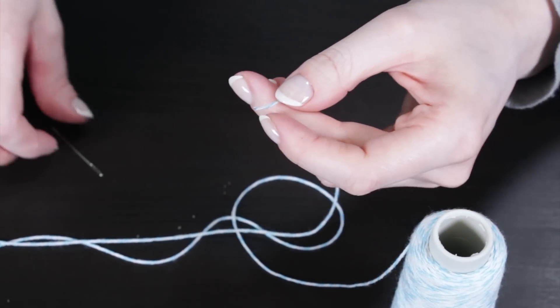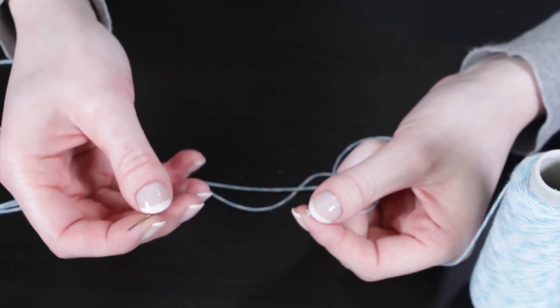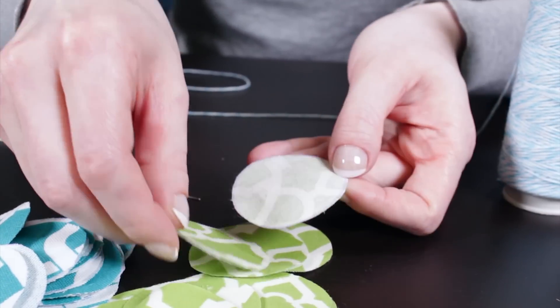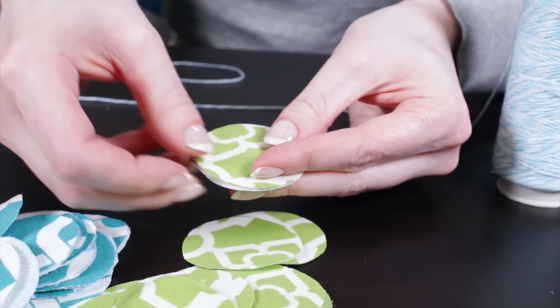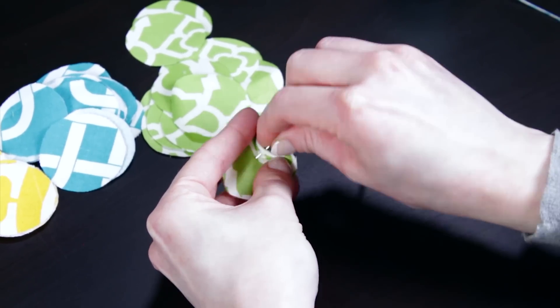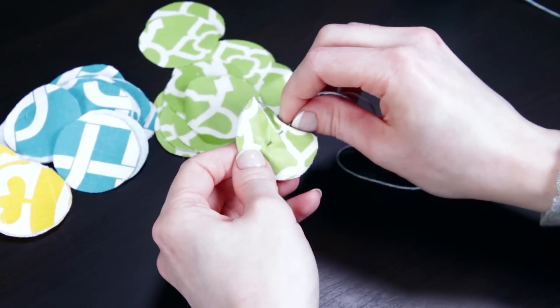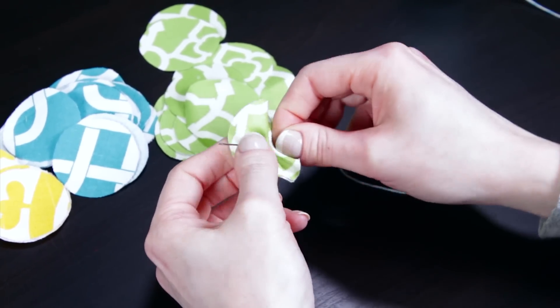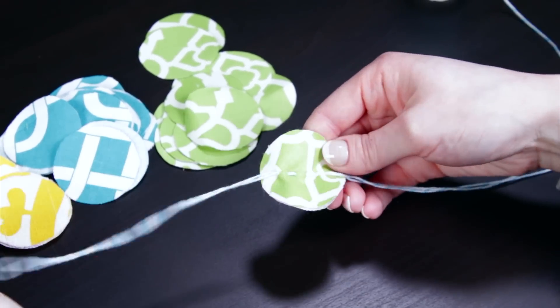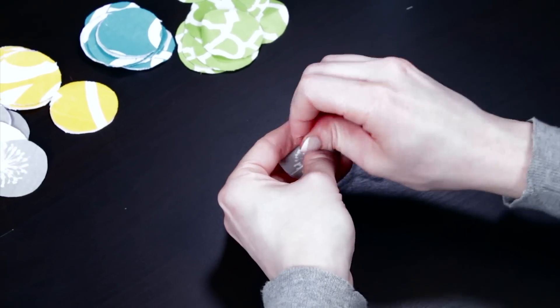To string the shapes together, you can either hand sew or use a sewing machine. I'm using baker's twine to hand sew these circles together. Since the fabrics I'm using are one sided, I'm putting two back to back. Use a running stitch to go down the middle of the circle. Bring the needle in and out of the fabric several times and move on to the next one. Make the garland however long you want.